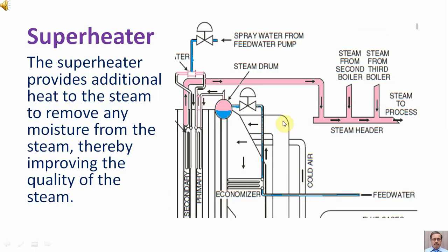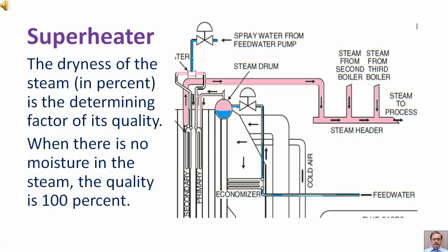The superheater provides additional heat to the steam to remove any moisture from the steam, thereby improving the quality of the steam. The steam leaves the boiler drum, passes through the primary superheater, then through the desuperheater, and then again through the secondary superheater. Finally, the steam goes to the steam header. The dryness of the steam in percent is the determining factor of its quality; when there is no moisture in the steam, the quality is 100%.